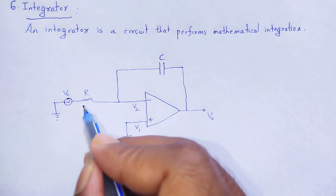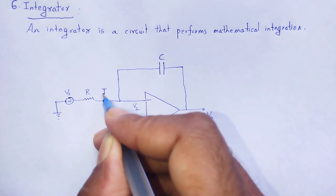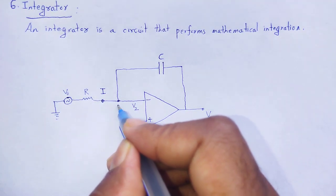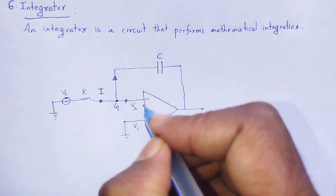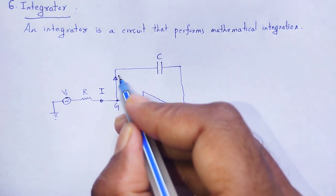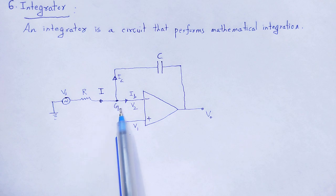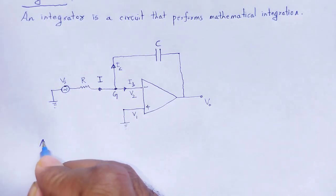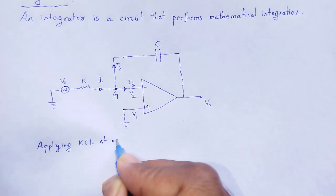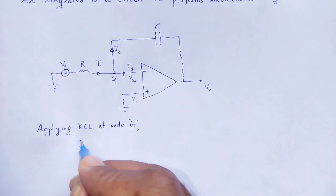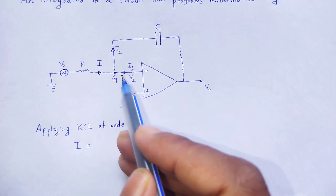The current from the signal voltage across resistor R, let it be I. That current is divided at node G — through the OPAM, let it be IB, and through the capacitor having capacitance C, let it be IC. We can apply Kirchhoff's current law at node G. Applying Kirchhoff's current law: current in is equal to current out — incoming current to node I, outgoing current from the OPAM IC plus IB.